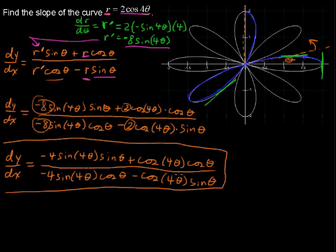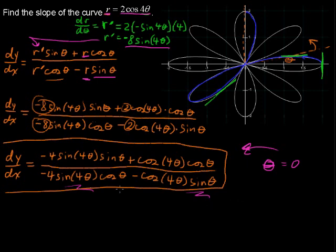You're thinking that doesn't look so nice — and sure it doesn't — but let's just plug in theta equals 0. Anytime you have sine of theta with theta equals 0, it would be 0. That appears in both terms of the denominator, giving 0 minus 0 equals 0. Zero in the denominator makes an undefined expression, which gives us our vertical or undefined slope right at that point — exactly what we predicted initially.